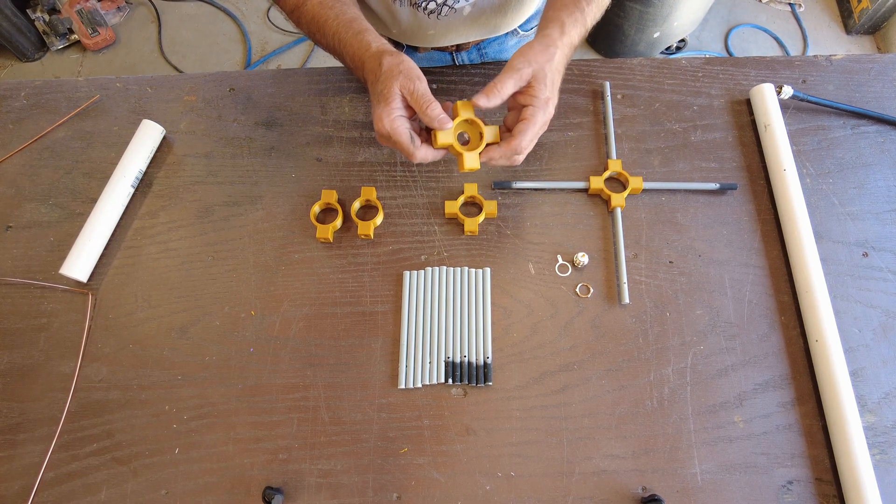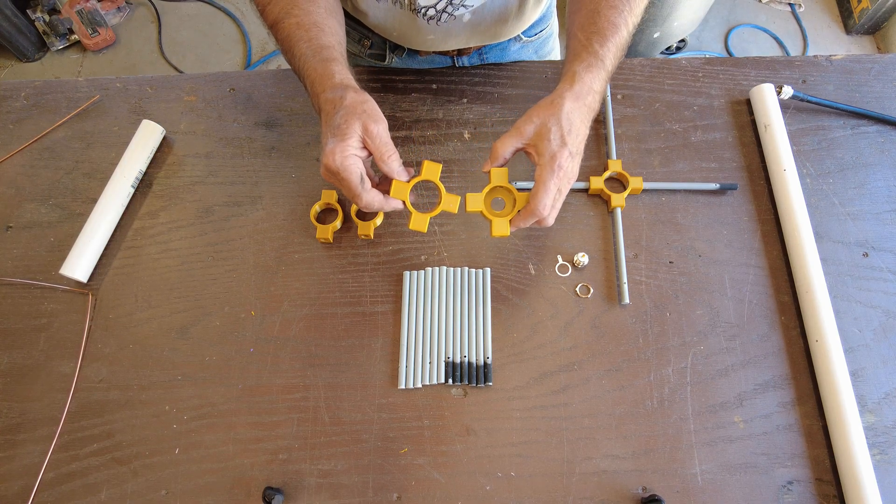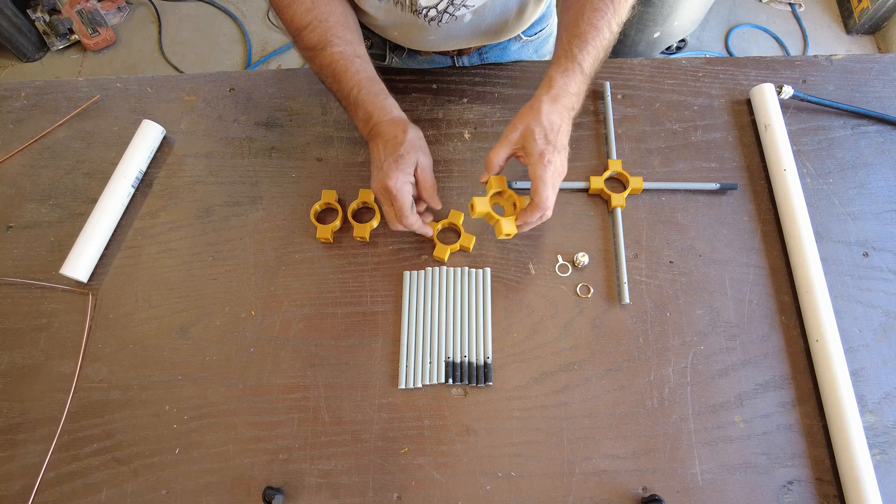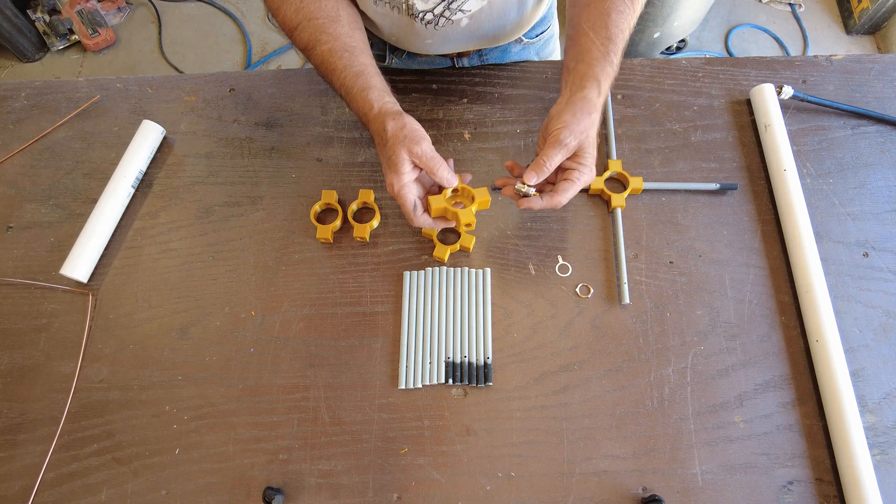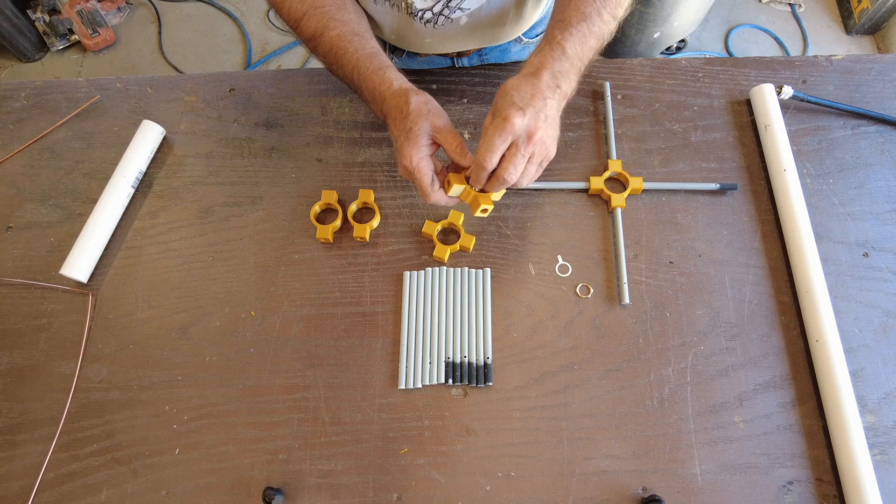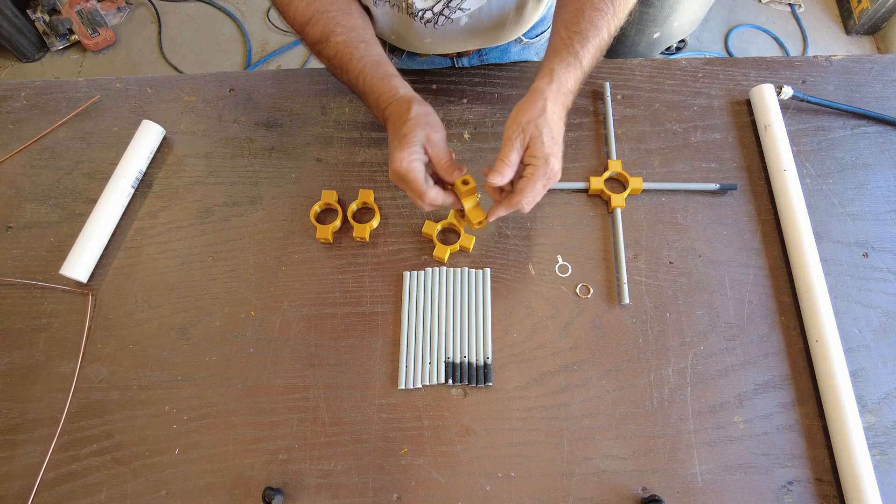The top collar is different from the middle one so that it can hold a standard SO239 UHF chassis mount connector. And that's where we make the connection of the wires at the top there.